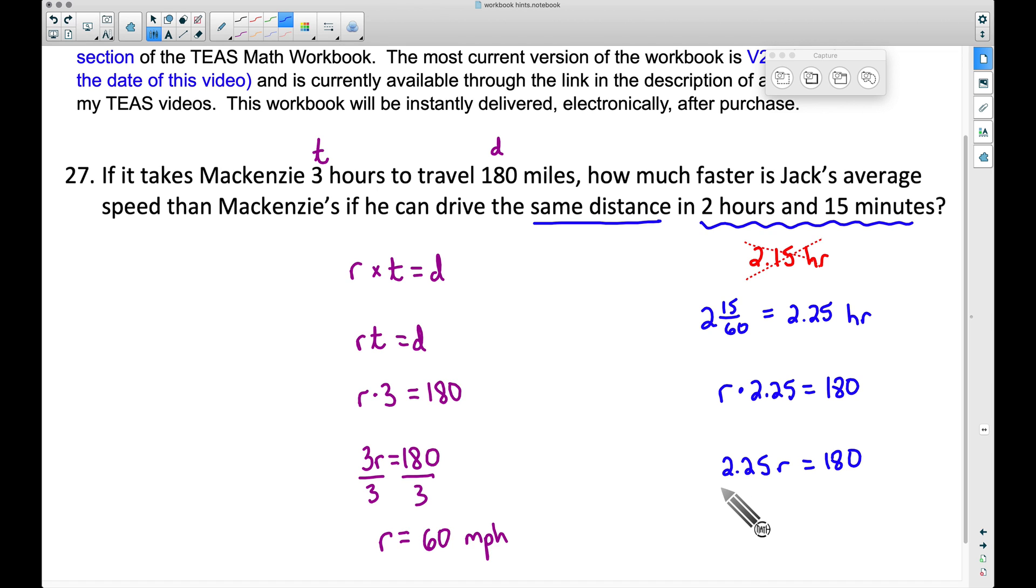We need to divide both sides by 2.25 to solve for Jack's rate. If you take 180 divided by 2.25, you will actually get Jack's rate or speed of 80 miles per hour.